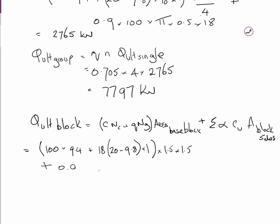Now we want the shaft, like before: 0.9 for alpha, CU is 100, and the area of the sides of the block is 1.5 metres in plan length times 18 metres long which is the depth of the pile, and there are four of them. Four sides to the block, so it's 1.5 times 18 times 4, and that will give us the shaft adhesion on the block.